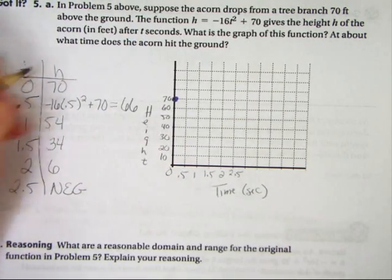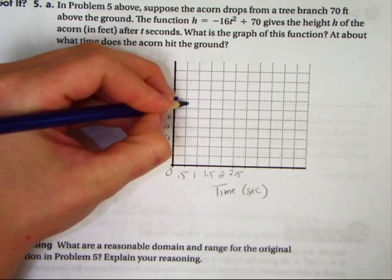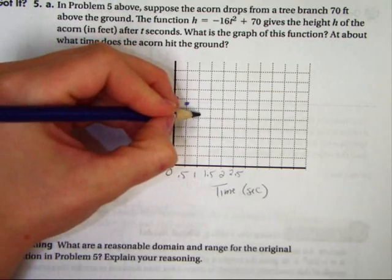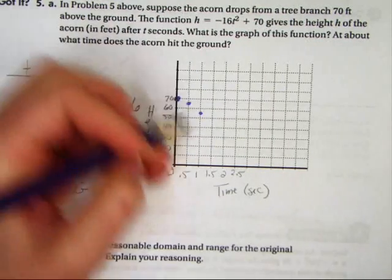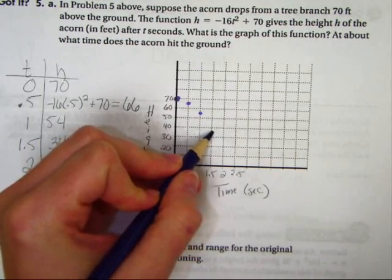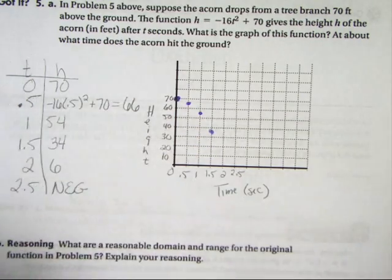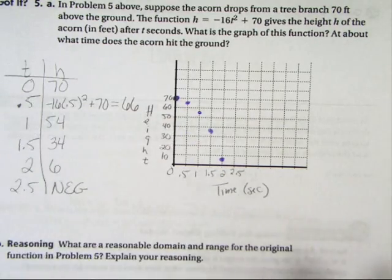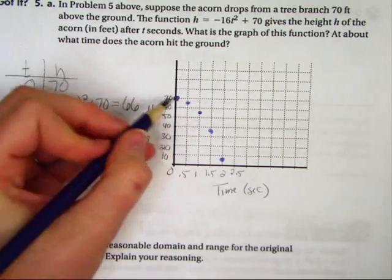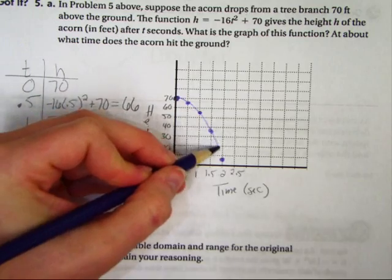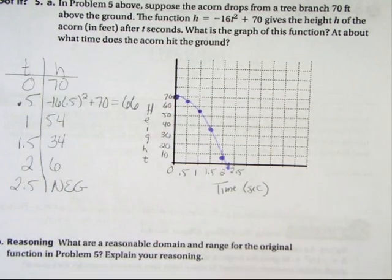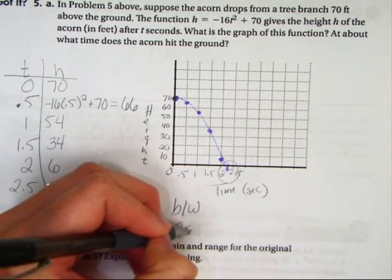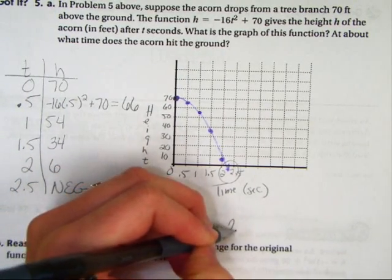0, 70, 0.5, 66, 1.154, 1.5, 34. That was a big drop. 2, 6. And then all we know is that it went past, it hit the ground at some point in time. So here's the acorn falling. And the question's about what time does it hit? We're going to say between 2 seconds and 2.5 seconds.